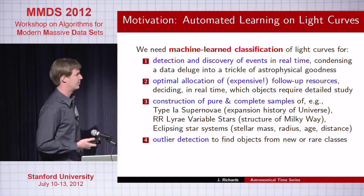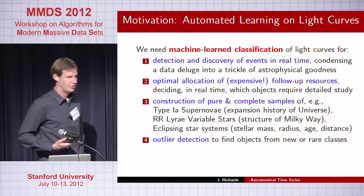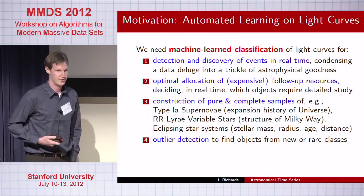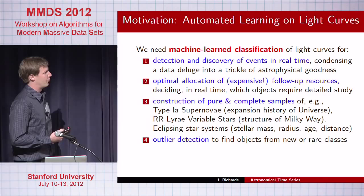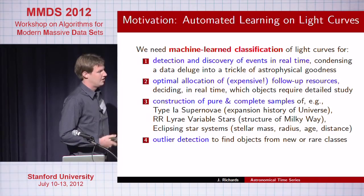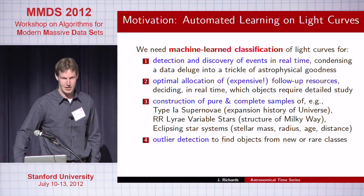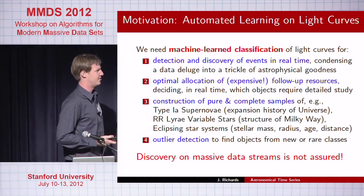Third is classification to construct pure and complete samples of objects. Type 1a supernovae, for instance, are useful for cosmological research — the accelerated expansion of the universe was ascertained through detailed study of their brightnesses. Other objects are useful to probe the structure of our own galaxy and understand basic physics. And of course, outlier detection — some of the biggest physical insights come from discovering new classes of variability. Just because LSST is coming online doesn't mean discovery on these data streams is assured.